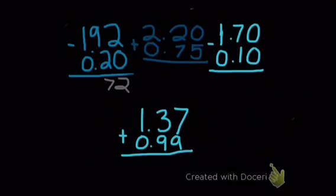Remember to put your decimal. Okay, 1 minus 0 is 1. So your answer is 1 and 72 hundredths.